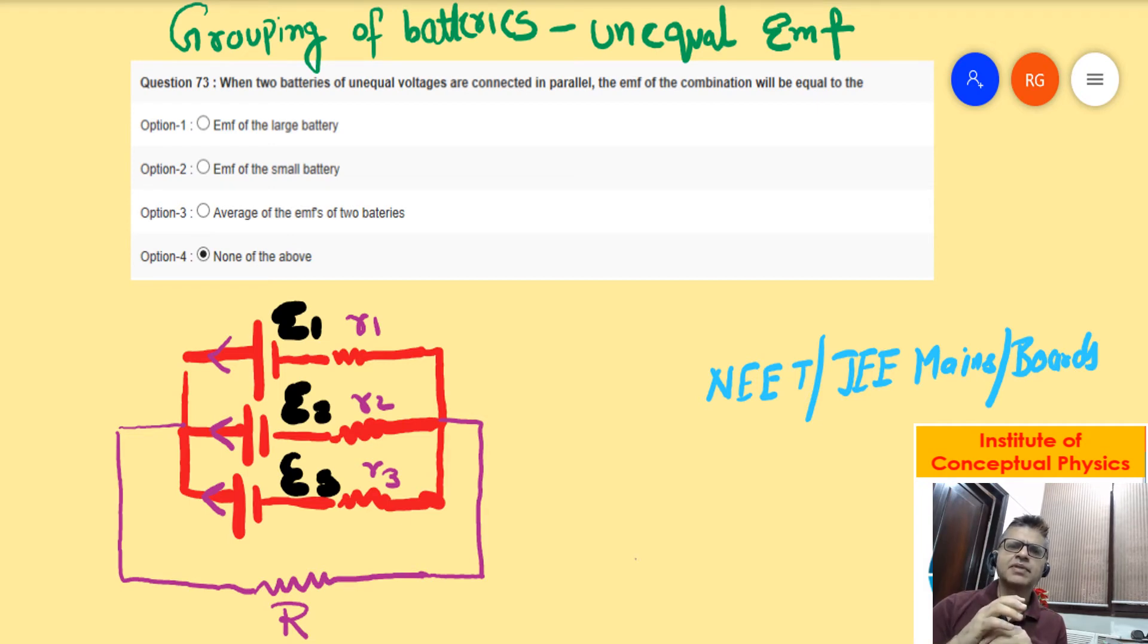The purpose of connecting equal EMF batteries in parallel is to get more current. Now there is a situation in numericals where you have batteries connected in parallel but they have different magnitudes. If you connect batteries of unequal magnitude, there is an MCQ which I have put there.